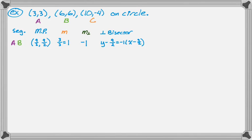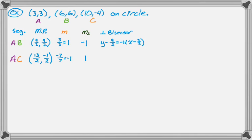I really only need 2 perpendicular bisectors, so I'll go with AC. The midpoint: 10 plus 3 divided by 2 is 13/2, and negative 4 plus 3 divided by 2 is negative 1/2, giving midpoint (13/2, −1/2). The slope: negative 4 minus 3 is negative 7, over 10 minus 3 which is 7, so negative 7/7 = negative 1. The opposite reciprocal of negative 1 gives positive 1. So the perpendicular bisector uses midpoint (13/2, −1/2) and slope 1.